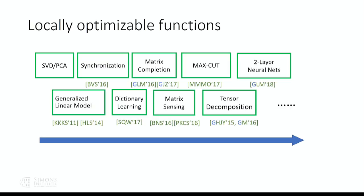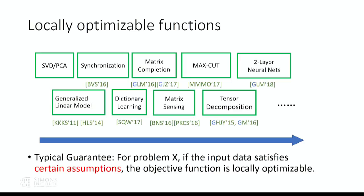Usually the guarantees in these works look like this: for a certain problem — whether it's matrix completion or neural networks — if the input data satisfies certain assumptions, in particular if the input data is generated according to some model, then the objective function is going to be locally optimizable. That's nice in the sense that we can now say for all of these functions, their objectives are easy and we can use the simplest algorithms to find the global optimal solution. But I always worry when I see these kinds of guarantees, because we always need to make some assumptions since this is a non-convex optimization problem.